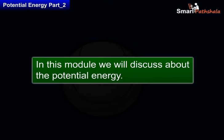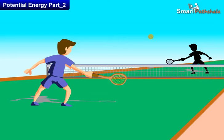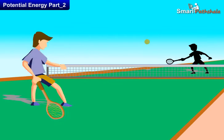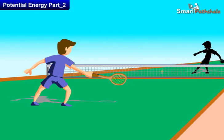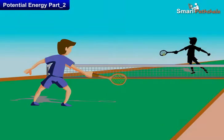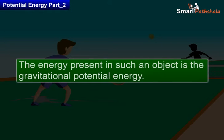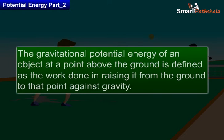In this module we will discuss about Potential Energy. An object increases its energy when raised through a height. This is because work is done on it against gravity. The energy present in such an object is the Gravitational Potential Energy. The gravitational potential energy of an object at a point above the ground is defined as the work done in raising it from the ground to that point against gravity.